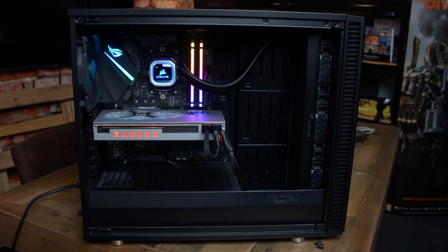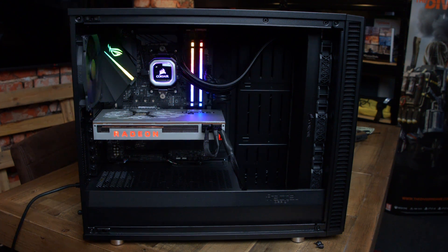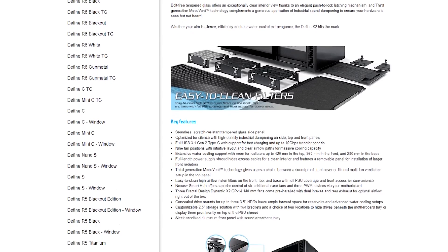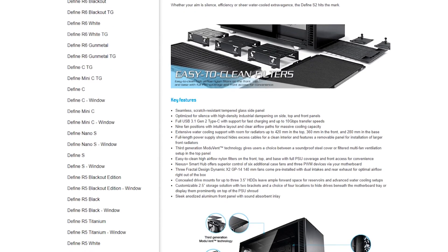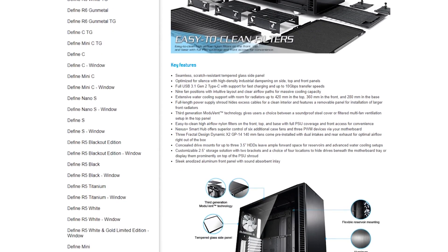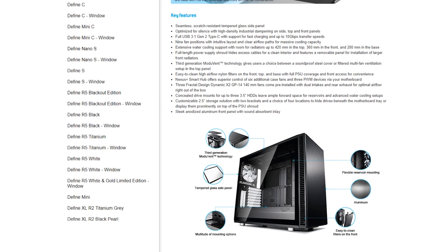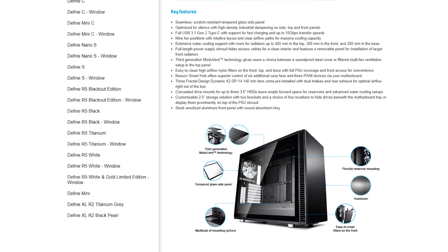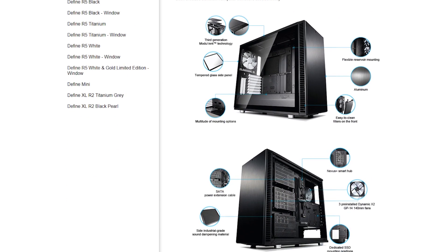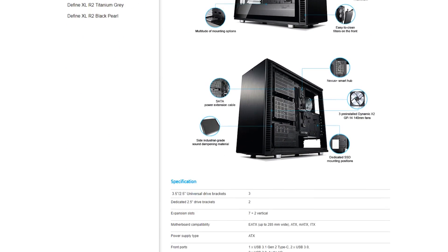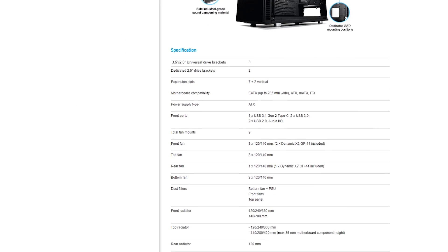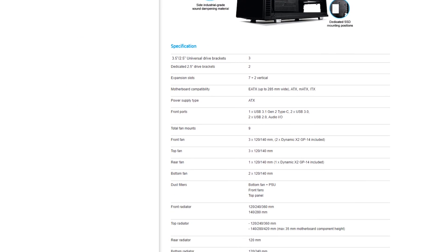First and foremost, let's start with your case. Cases come in all shapes and sizes, but regardless of what you end up going with, you'll want to know what kind of fans your case supports. Usually a quick search for the case you're interested in will take you to the manufacturer's website. For this example we're looking at the Fractal Design S2. Looking at the specifications we can get more information about the fan layout in the case. We see that it supports nine total fan mounts.